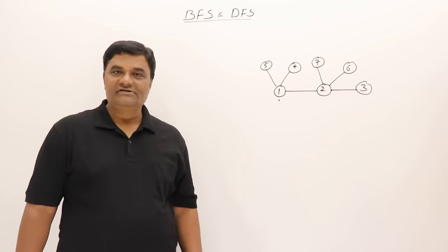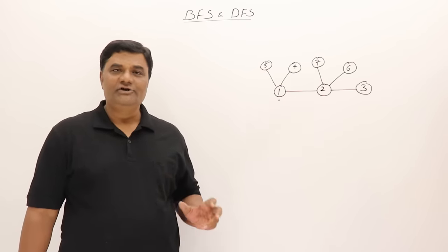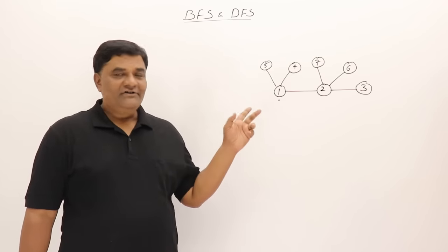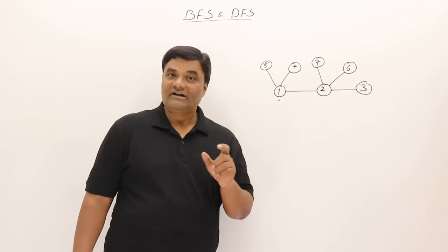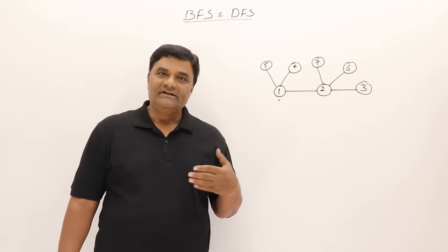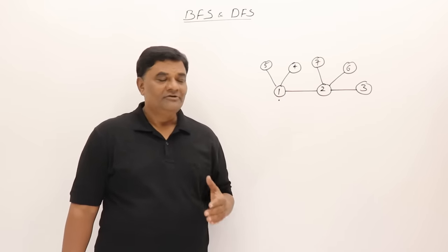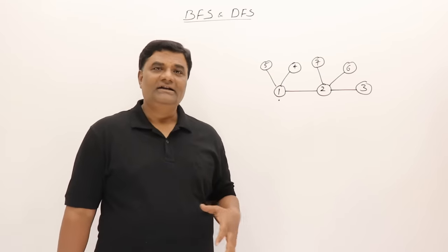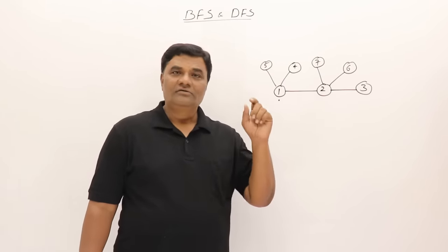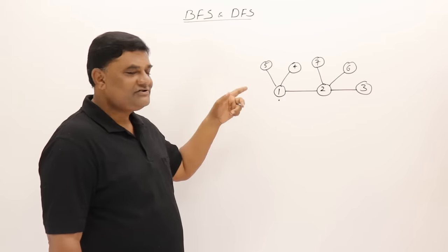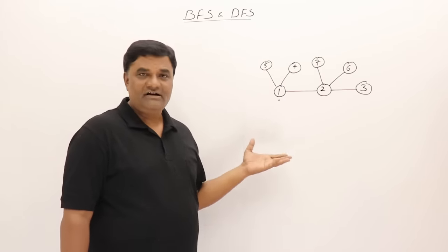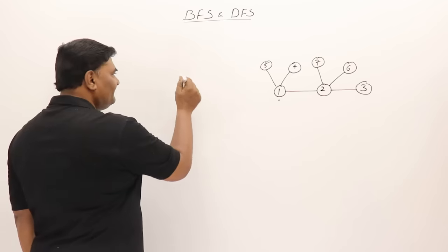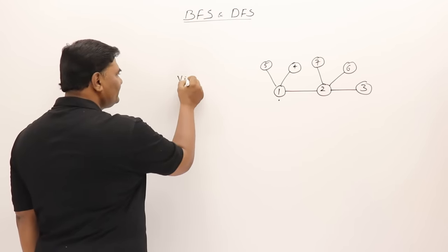The topic is breadth first search and depth first search. In this video I'll cover these two traversal methods by taking various examples. BFS and DFS are graph traversal methods. I'll first give a quick overview of the difference through a small example, then take another example and explain in detail. I've taken a simple graph — actually it's a tree, but a tree is also a graph — for quick understanding.